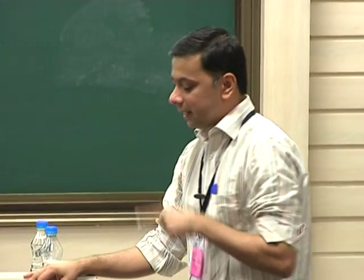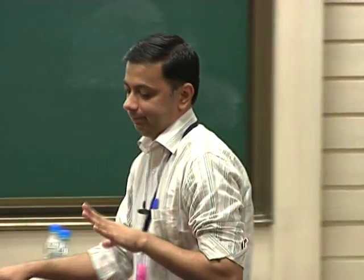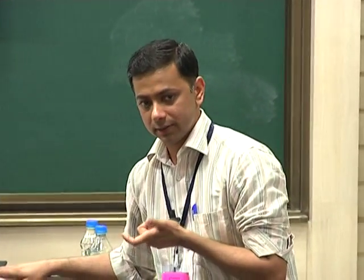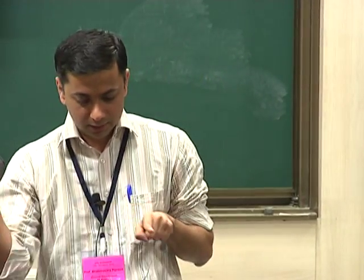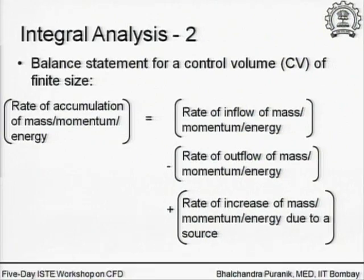For mass and energy, it is relatively easy to intuitively understand this balance: here is a region, something is coming in, something is going out, perhaps there is a source. These will all result in either a rate of accumulation or rate of decrease depending on which is larger.